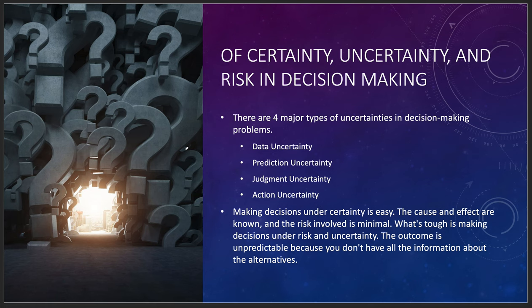There are four major types of uncertainty in decision-making: data uncertainty, prediction uncertainty, judgment uncertainty, and action uncertainty. We'll never be sure about everything, but we hope we got the model right. Making decisions under certainty is easy; under uncertainty it is a real risk. Some companies simply cannot tolerate risk — they need to work in a certain market doing a certain thing at a certain time. They're not good candidates for expert systems that make risky decisions.